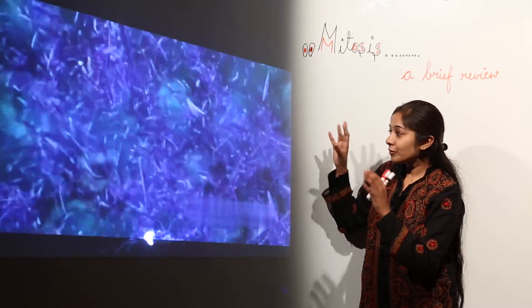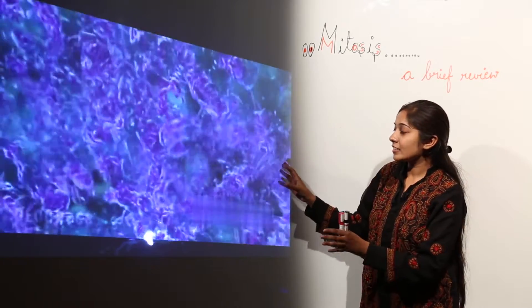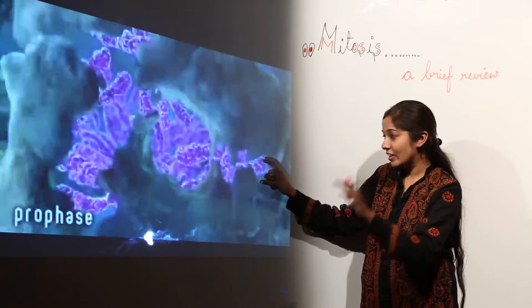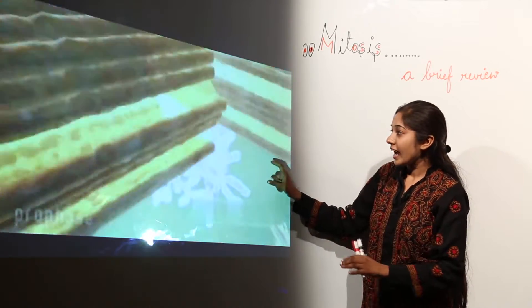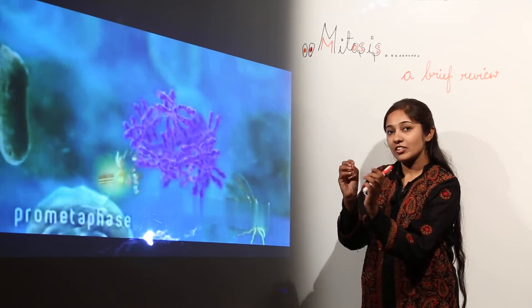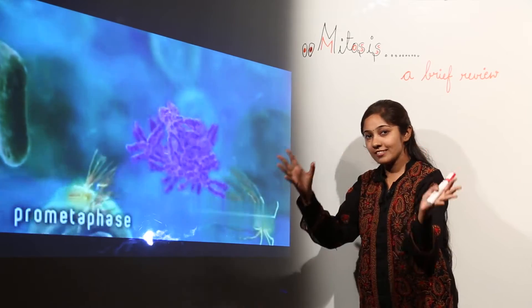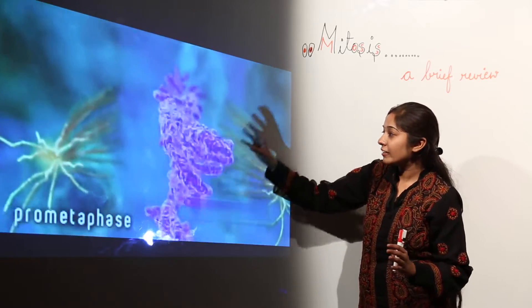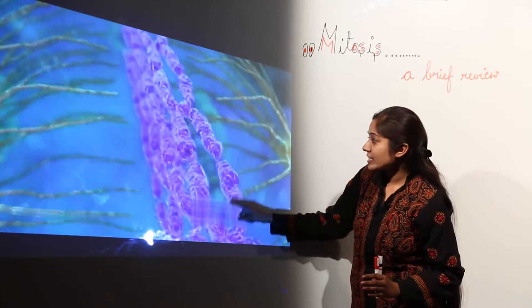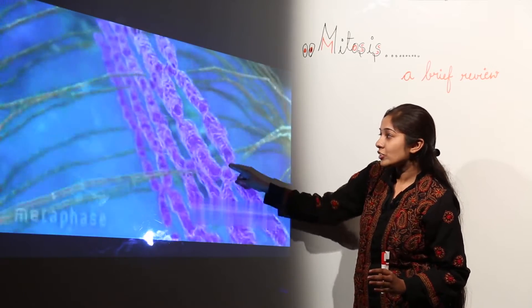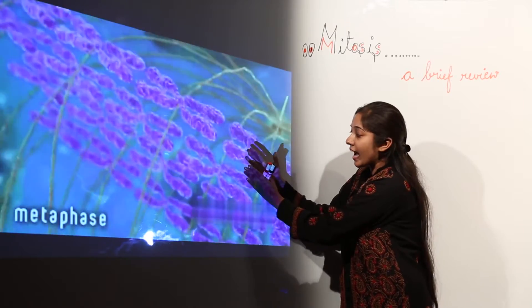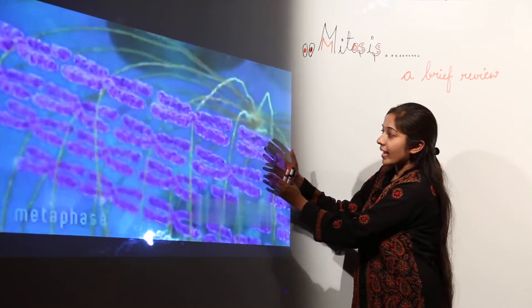The first phase of mitosis is prophase. During prophase, you can see the formation of chromosomes from chromatin fibers, which are thread-like structures. After prophase, the centrioles form and release structures known as asters, and these asters release spindle fibers which attach themselves to the central region of the chromosome at the equator.